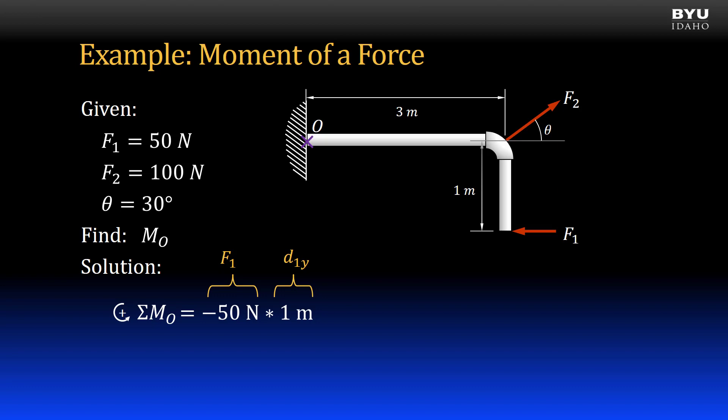Next, let's consider the moment caused by force F2. It is occurring at an inclination of 30 degrees from horizontal. The easiest way to deal with it is to break it into its vertical and horizontal components. The direction of the horizontal component aligns through point O, so let's move on to the vertical component.